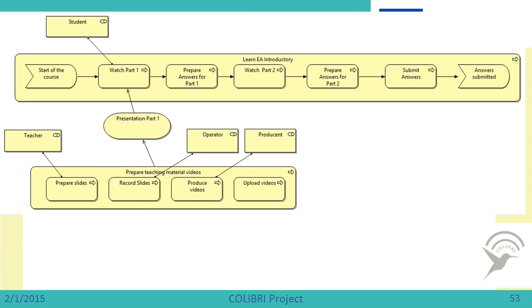Now try to construct this picture. We are adding elements to the business process already drawn — we know the one watching the video is a student. There is a service 'presentation of part one' made by another process, which is performed by a teacher, operator, and producer of videos. This process provides a service for the student so they can watch the video. Try to represent this in the tool and then proceed.